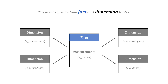The dimensions include things like the customers that gave us those sales, the products that they purchased, the employees who worked at our stores or our call centers, and information about different dates. All of those dimensions support the fact, which is the heart of our data.